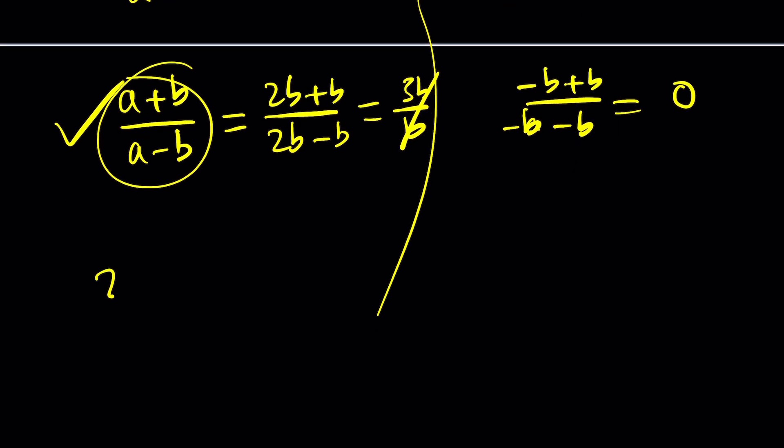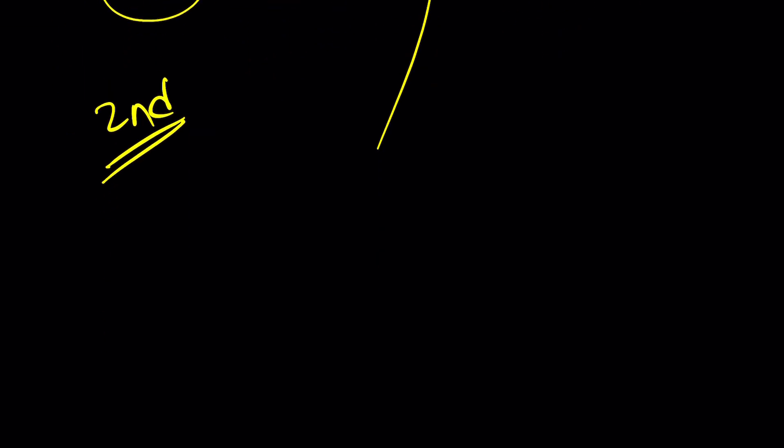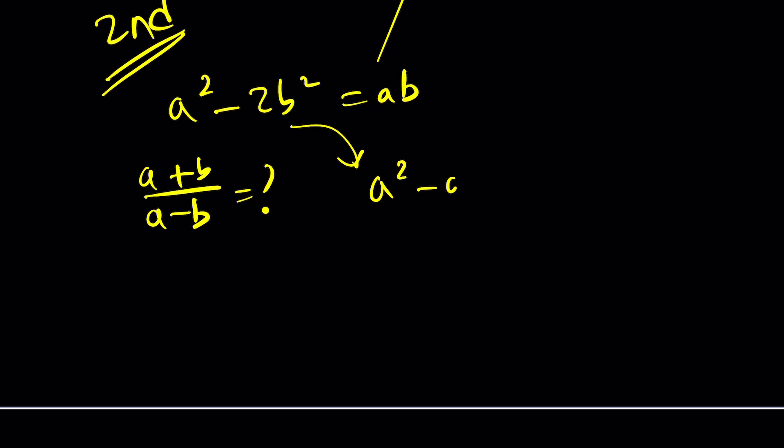Let's go ahead and quickly talk about the second method. Because I think the second method, I have a feeling you're going to like it better. Now let's take a look at it from a different perspective. Again, I'm going to put everything on the same side. But this time, I want to put the -ab in the middle. So I'll write it like this, and then divide both sides by b².